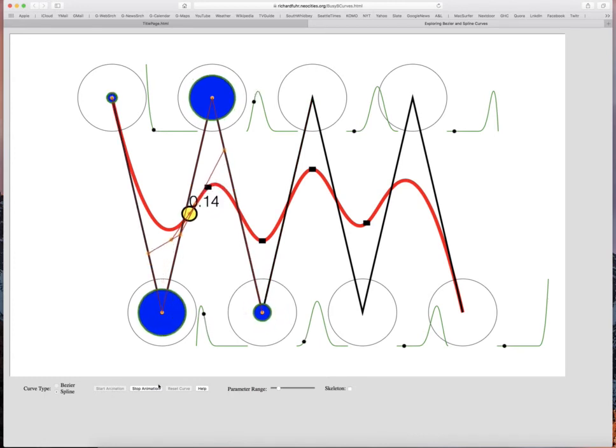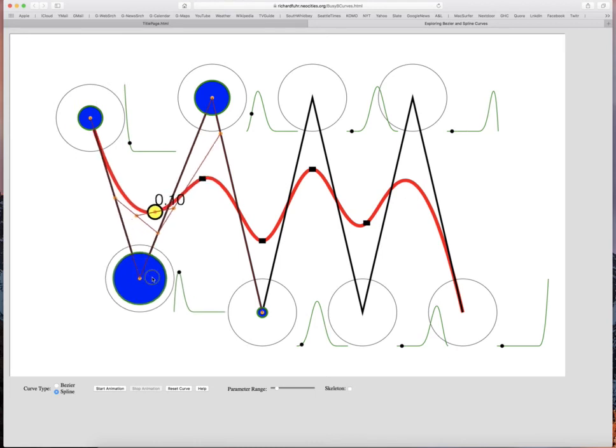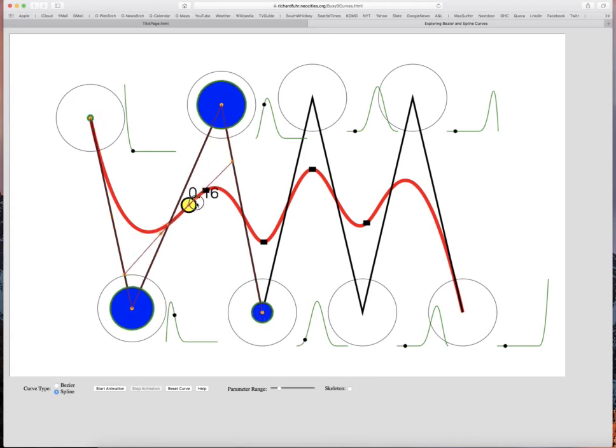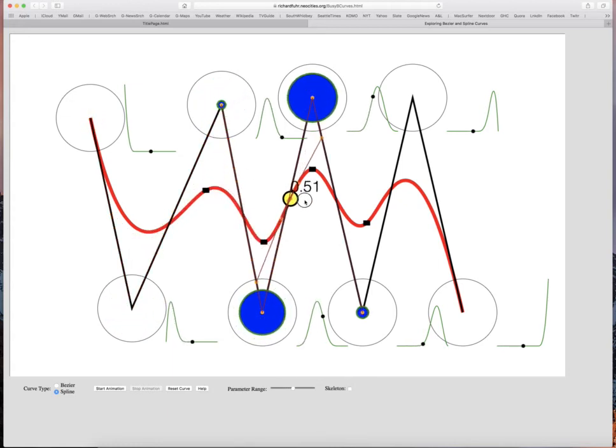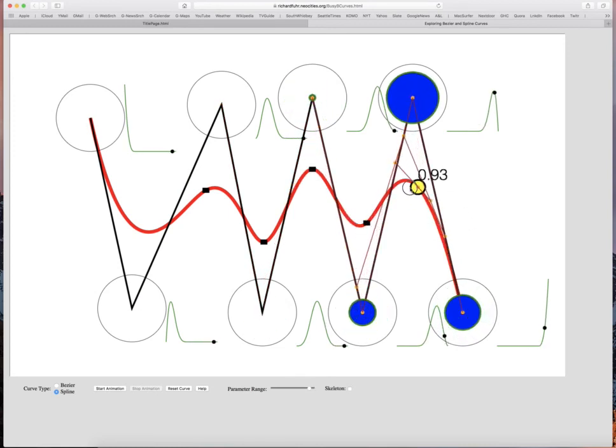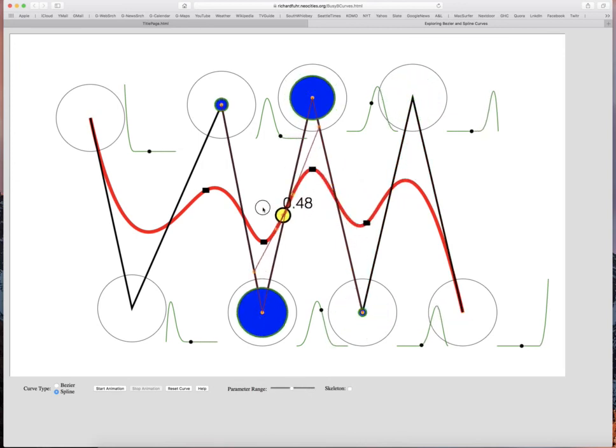So if we stop the animation, we can click and drag various control points, and we can see the curve move. You can also see the green graphs of the B-spline basis functions adjacent to each control point. And we can also drag the yellow point along the curve. And as we do that, we see the graphs, the little points on the graphs, move. And we also see the blue circles expand and contract.